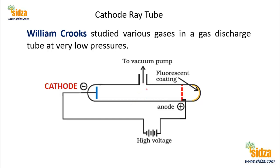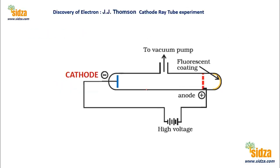Thomson found that these cathode rays consist of small negatively charged particles called electrons. In a discharge tube experiment, you take a gas at very low pressure and apply a very high voltage. Thomson found that when you apply a very high voltage to a gas in a discharge tube at very low pressure, some radiations come from the cathode and travel towards the anode. When they hit the glass surface at the end, which is coated with some fluorescent material, it glows.